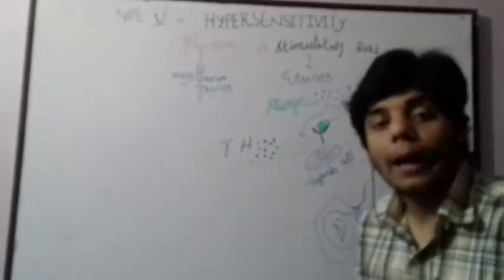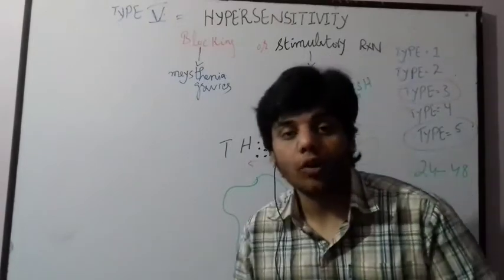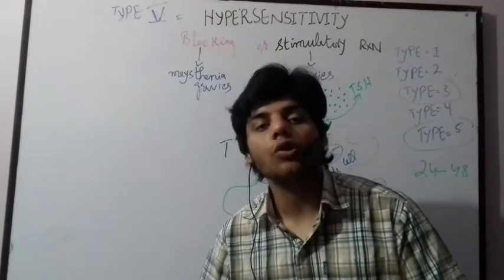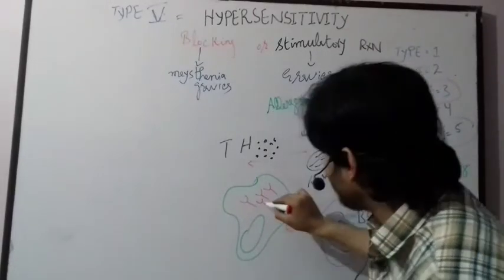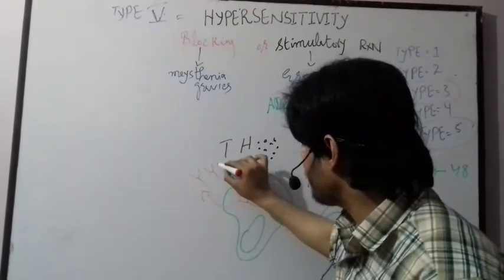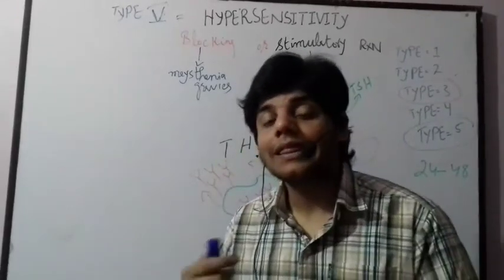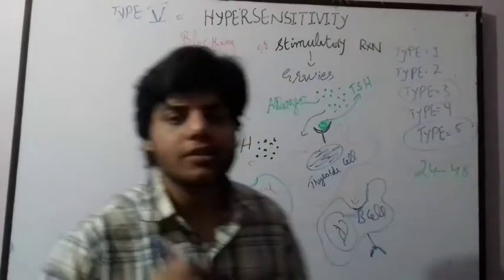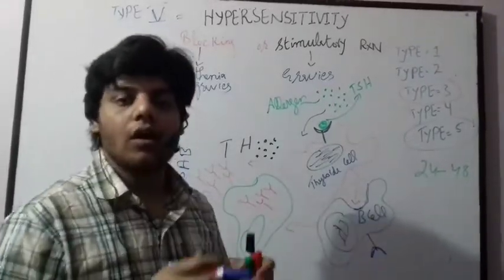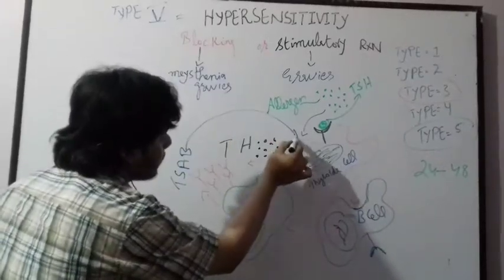The B cells are converted into plasma cells. As we discussed before, plasma cells are the antibody machine — the antibody factory or antibody industry. They contain and secrete a large number of antibodies. In this case, they secrete thyroid-stimulating antibodies. These thyroid-stimulating antibodies then act on the thyroid cells.